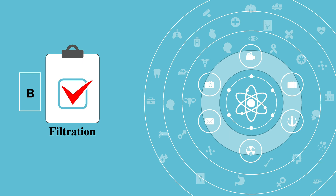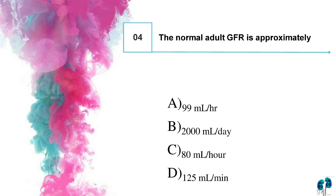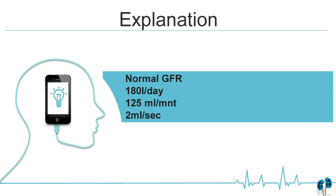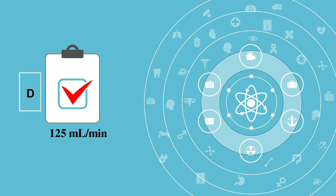The normal adult GFR is approximately: option A, 99 ml per hour; option B, 2000 ml per day; option C, 80 ml per hour; option D, 125 ml per minute. Normal GFR is 180 liters per day, or 125 ml per minute, or 2 ml per second. The right answer is option D, 125 ml per minute.